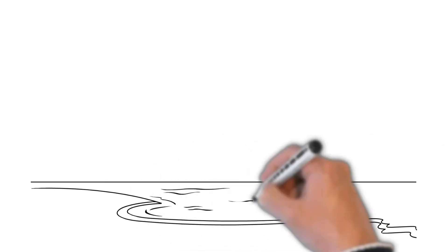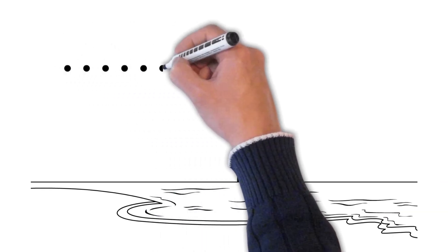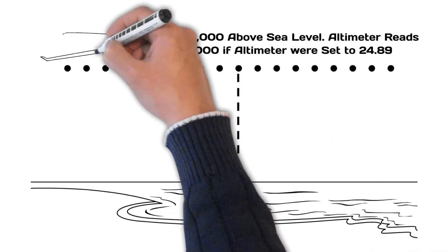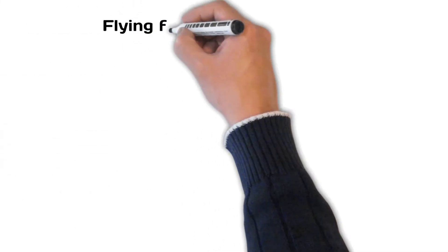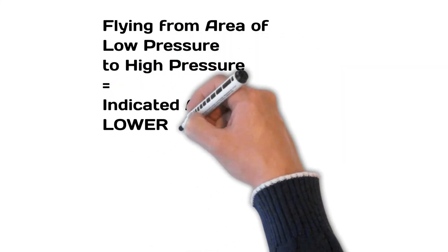If we flew to an area that was at sea level, our altimeter would still show 5,000 feet if the altimeter wasn't adjusted, but we would actually be 10,000 feet above the surface. Thus, our indicated altitude would be lower than our actual altitude.